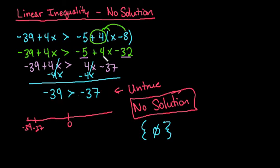So no matter what number I plug in here, I'm going to end up with an untrue statement. So if it was a true statement, then it's all reals if your variables cancel out. If it's an untrue or a false statement, then there is no solution.